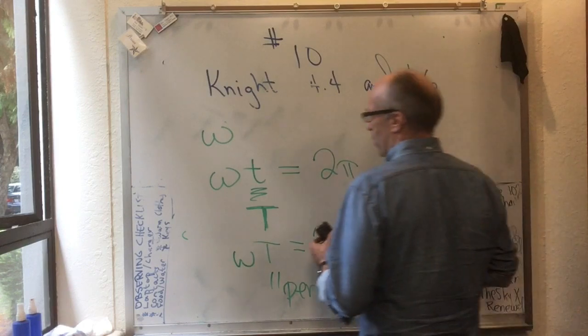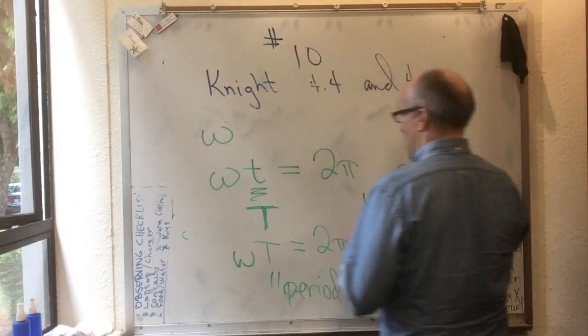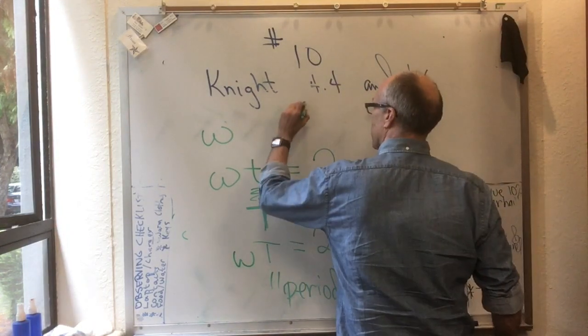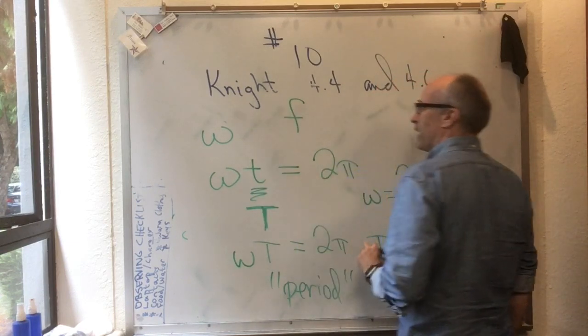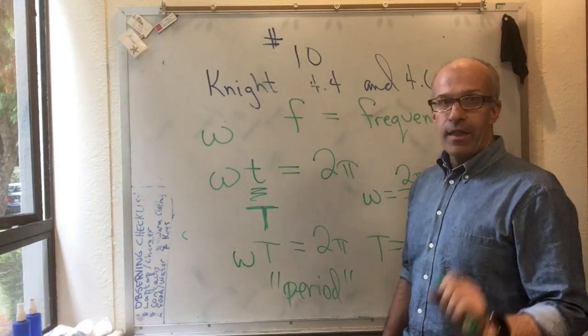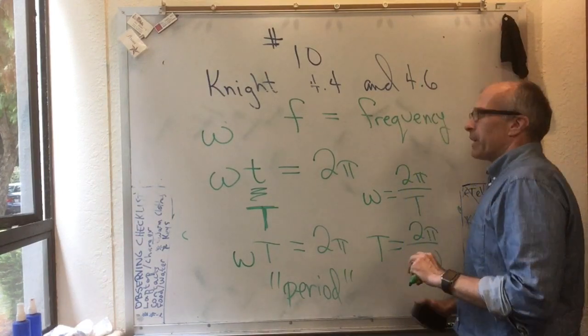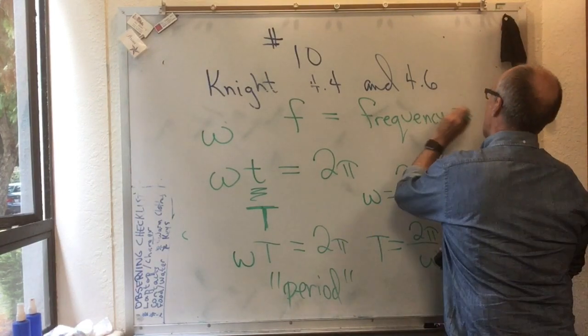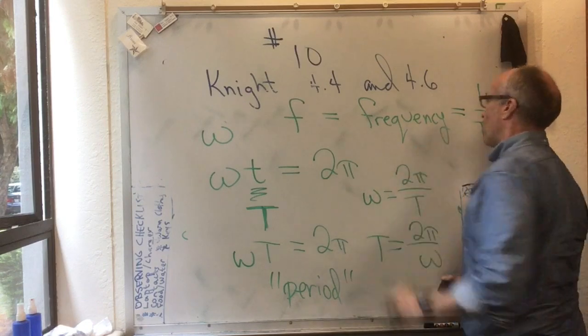Okay, now there's one more symbol that is extremely commonly introduced in angular motion, and that's f. f is what we call the frequency. And that is 1 over the time to go around once.